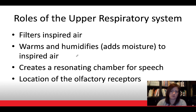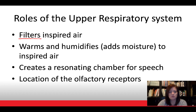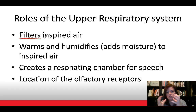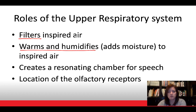What does the upper respiratory tract do for us? First, it filters the air we breathe — we don't want to inhale pathogens, dust, or pollen. There's a lining of mucosa in the upper respiratory system that traps pathogens so they don't reach the lungs. That mucosa is also responsible for warming and humidifying the air we breathe.